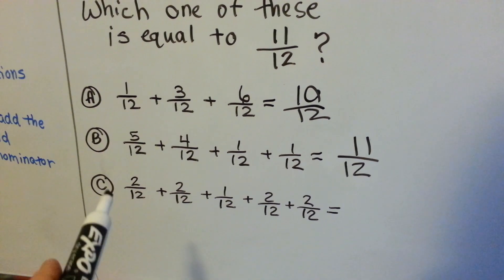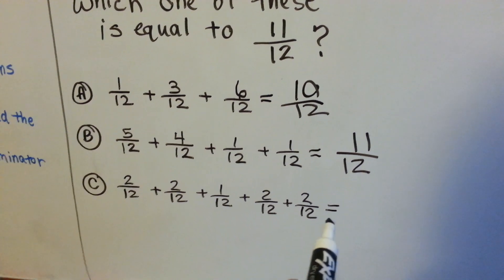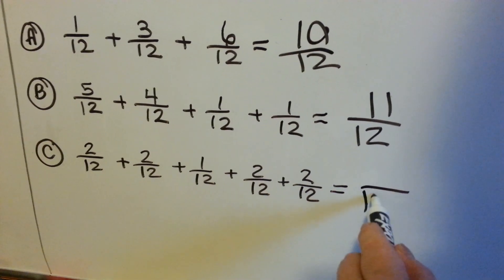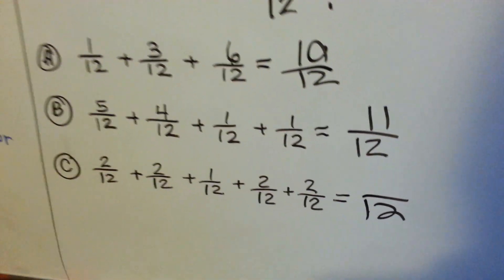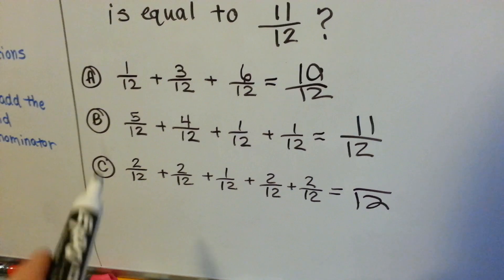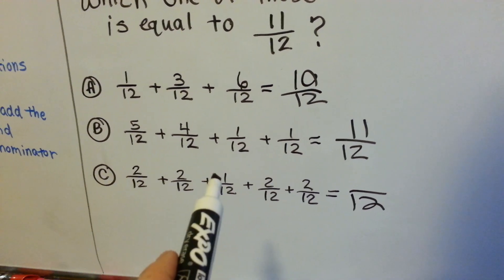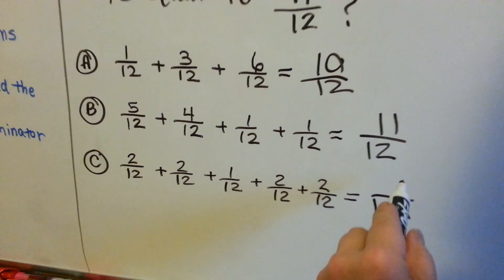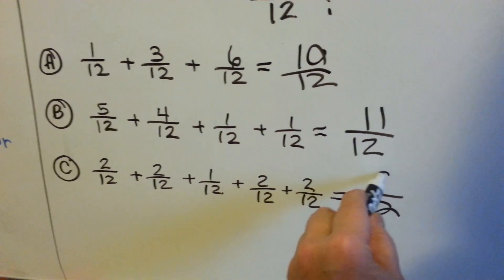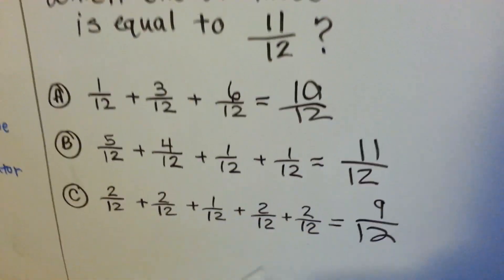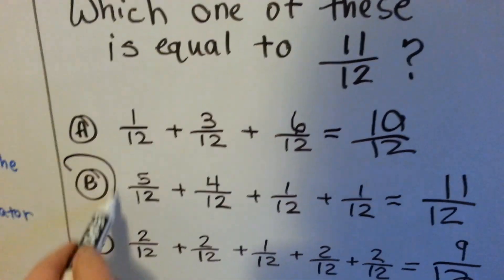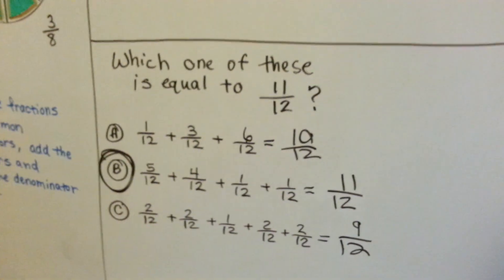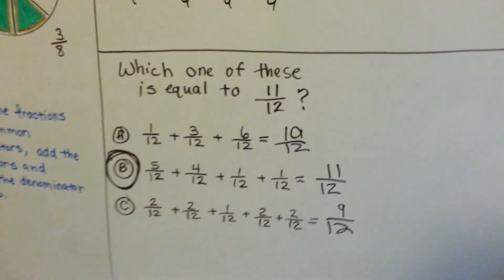What does option c equal? We slide the denominator over because they're all the same. 2 plus 2 is 4, plus 1 is 5, 6, 7, 8, 9 — so that one equaled 9 twelfths. The correct answer was b, which equaled 11 twelfths.